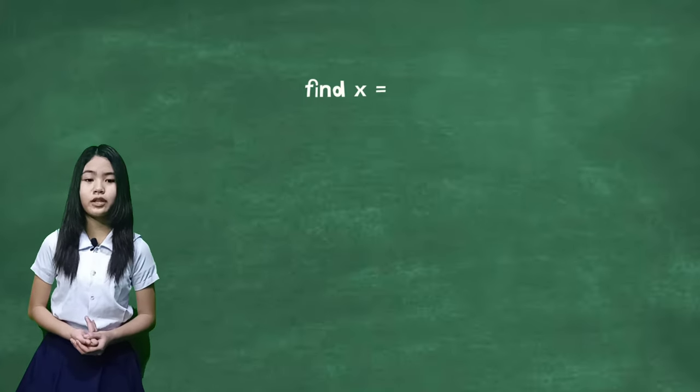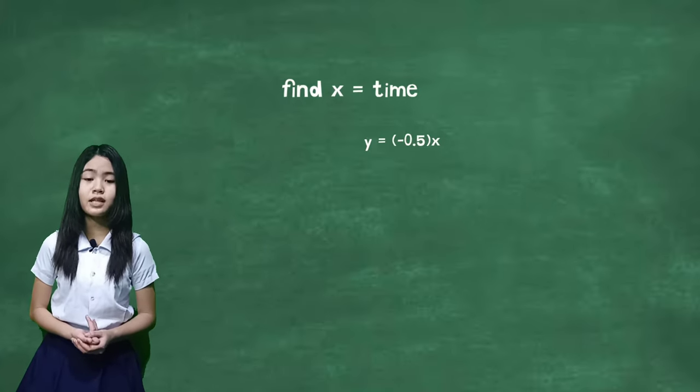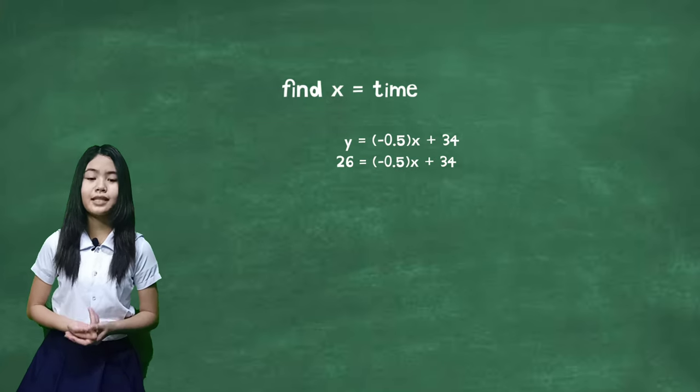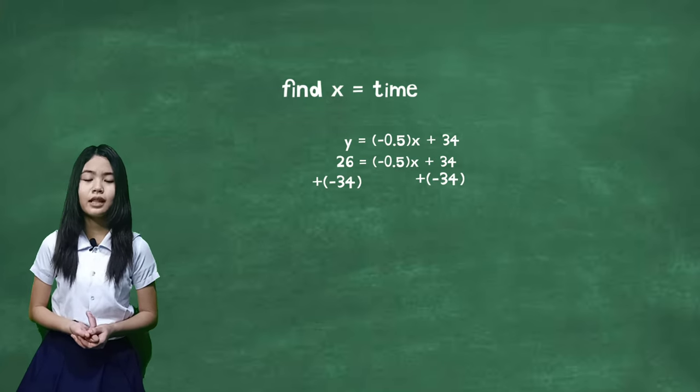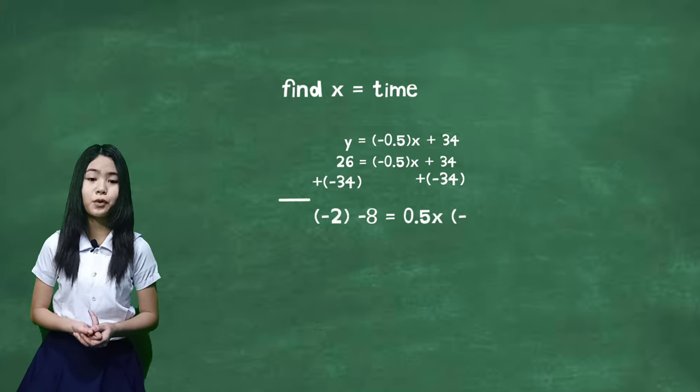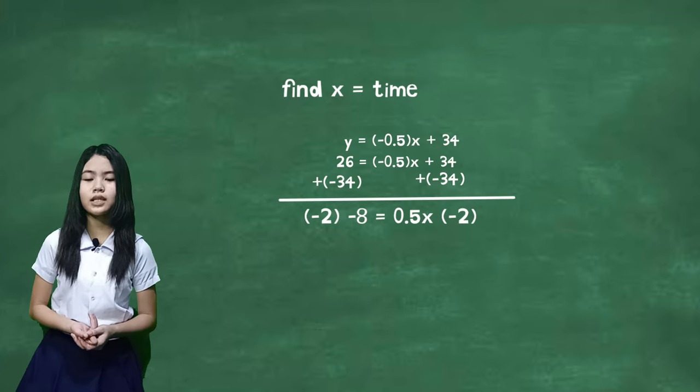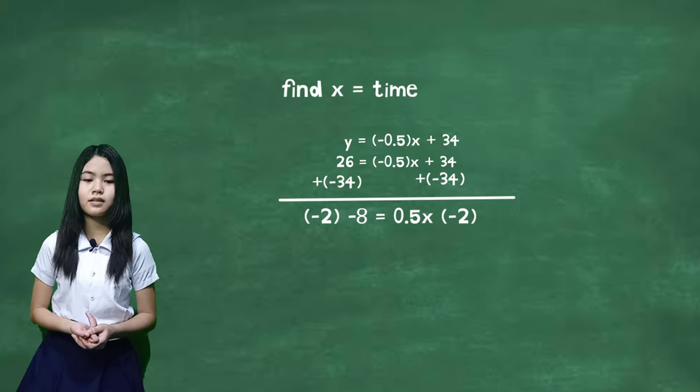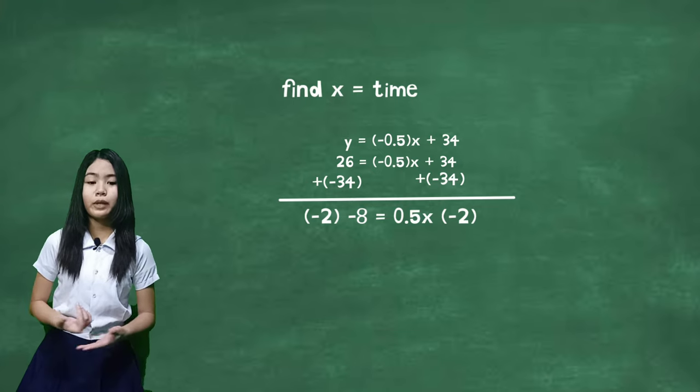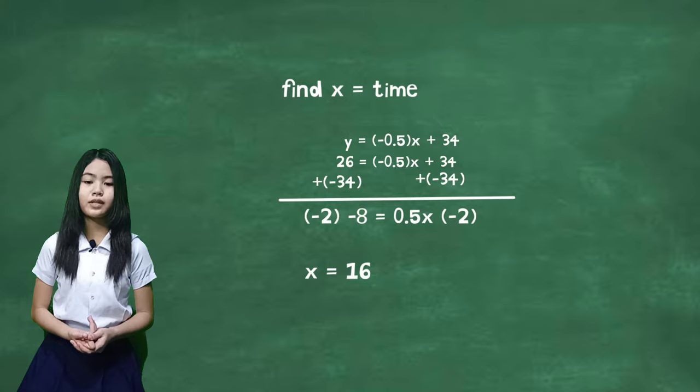Now let us find the x, or the time for the river to reach 26 feet. The expression is y = -0.5x + 34. Let's add -34 to both sides. When y = 26, we have -8 = -0.5x. Multiply both sides by -2, leaving us the answer of x = 16 days.